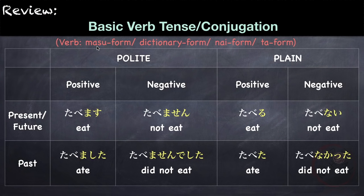Before we proceed, let's have a quick review of the basic verb conjugations and verb tenses that we've learned so far. We've learned about masu form, dictionary form, nai form, and ta form. So for the positive present or future tense, we use the masu form. For example, tabemasu, meaning eat. For the negative present or future tense, we use verb masen.